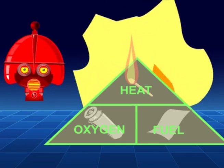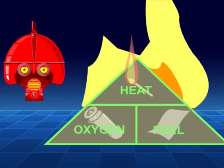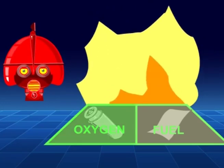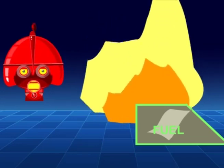Firefighting equipment works by removing one or more of the three ingredients in the fire triangle – by cooling down, by smothering or by removing the fuel source.